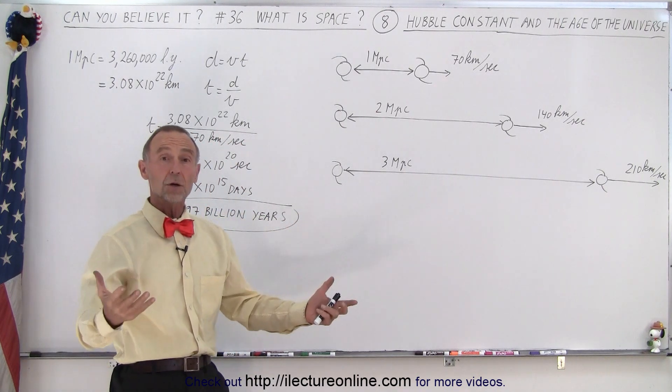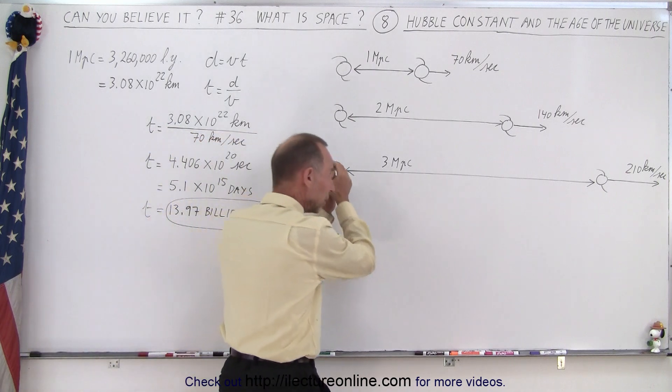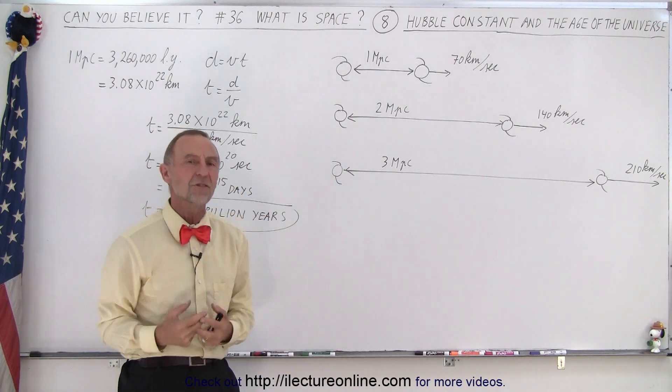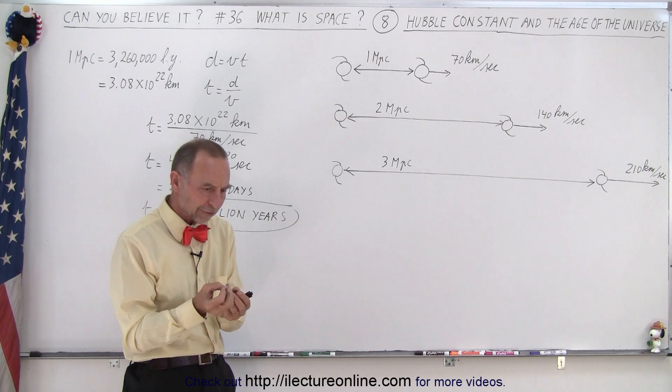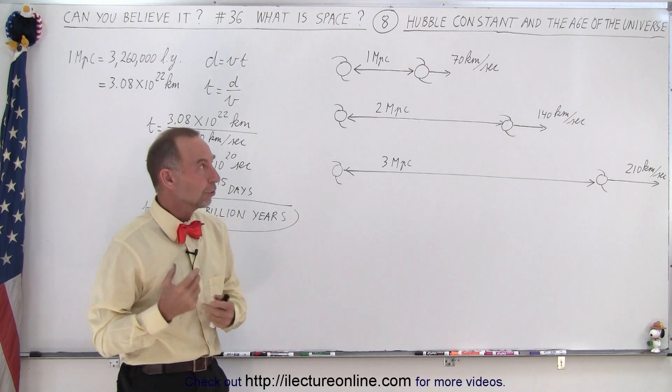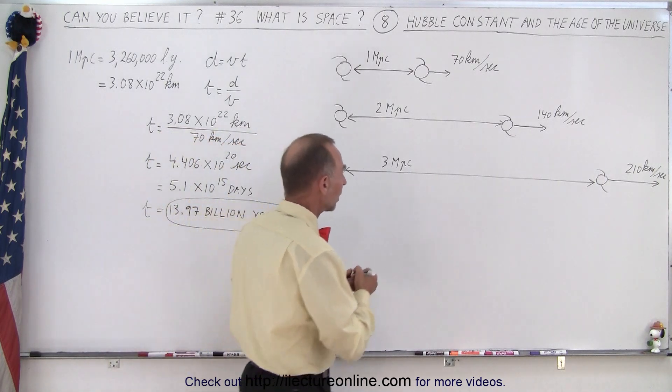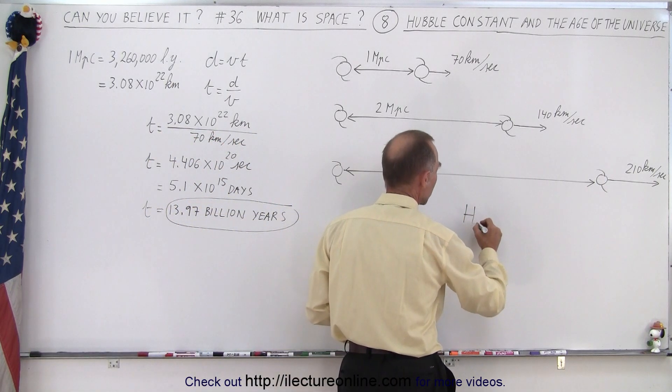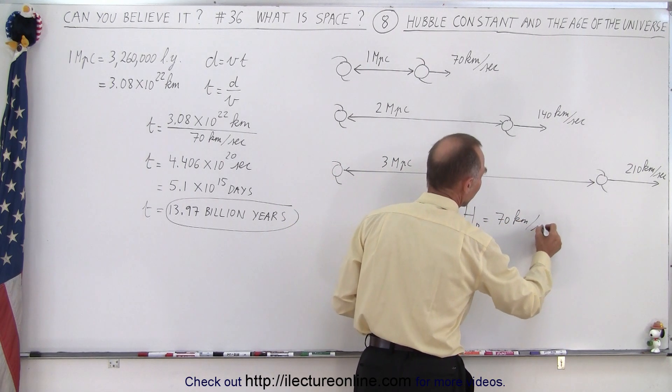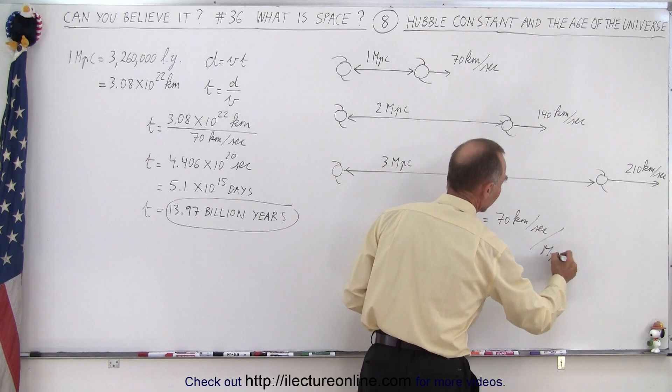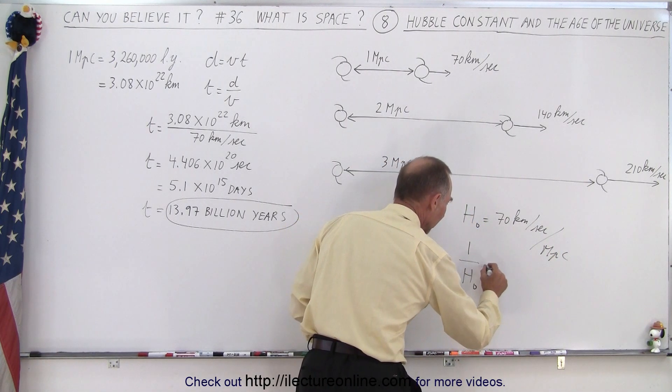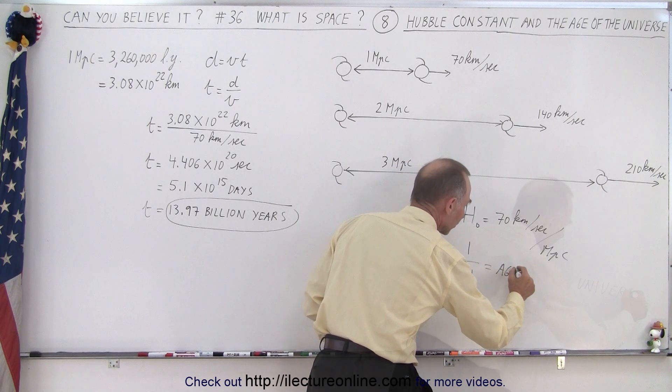So how long ago were the galaxies really close together? And was that the beginning of the existence of the universe? So if you can figure that out, we then know the age of the universe. So that means that the Hubble constant, which is known to be around 70 kilometers per second, per megaparsec. And then if we take the inverse of that, one over the Hubble constant, that is equal to the age of the universe.